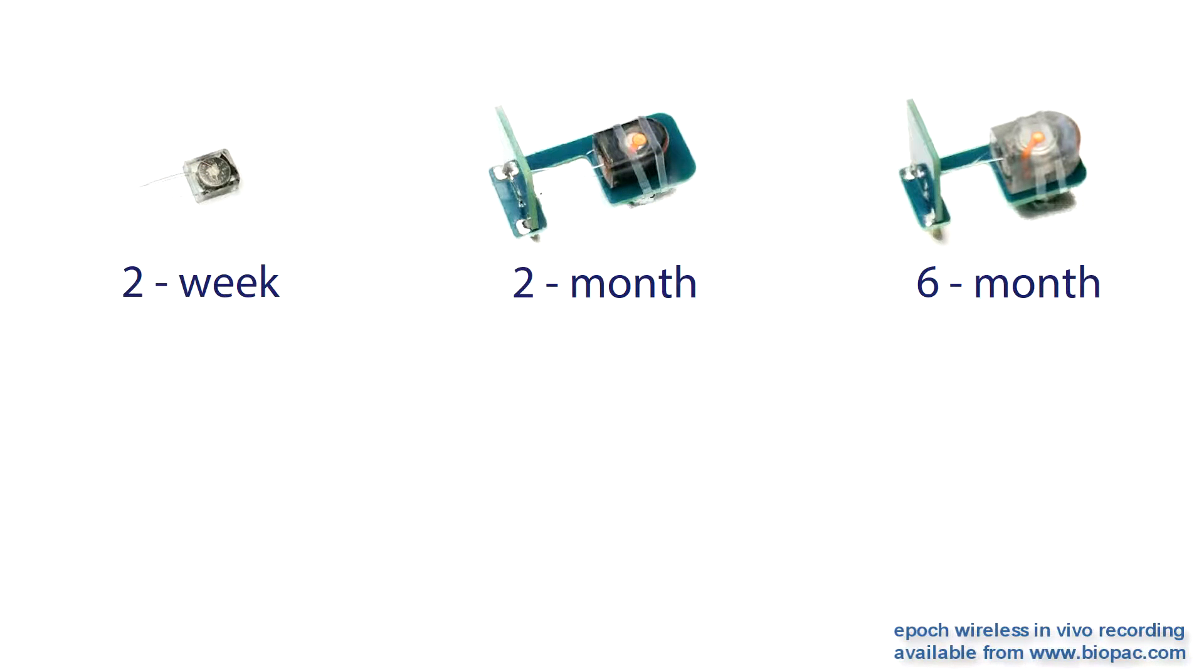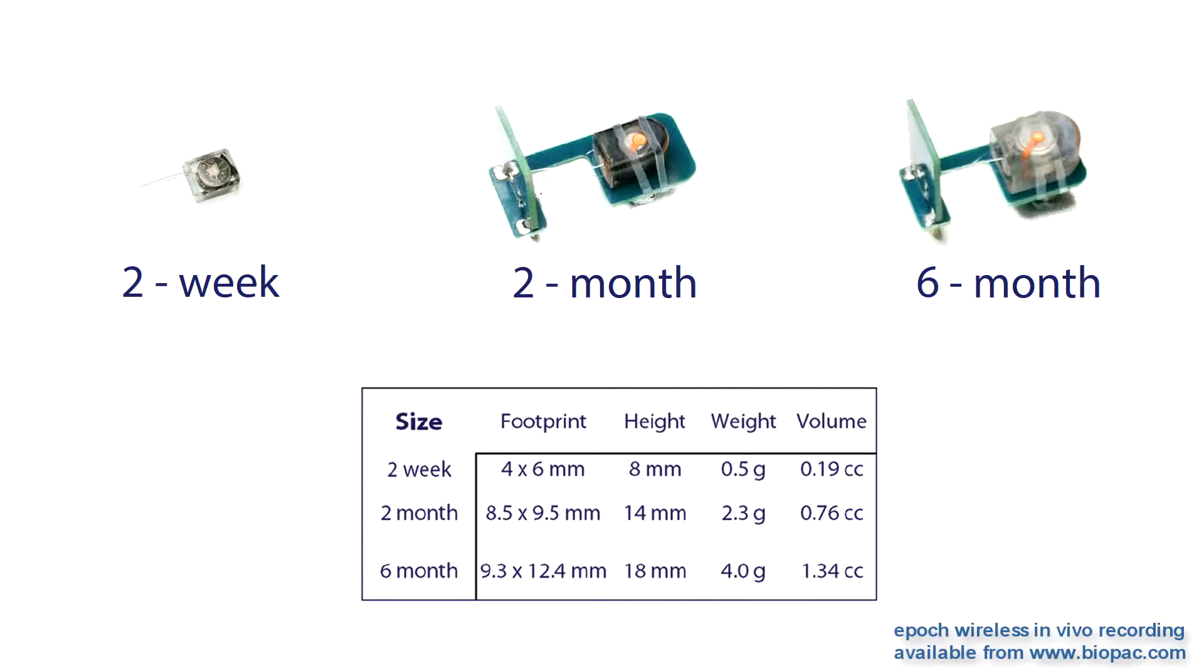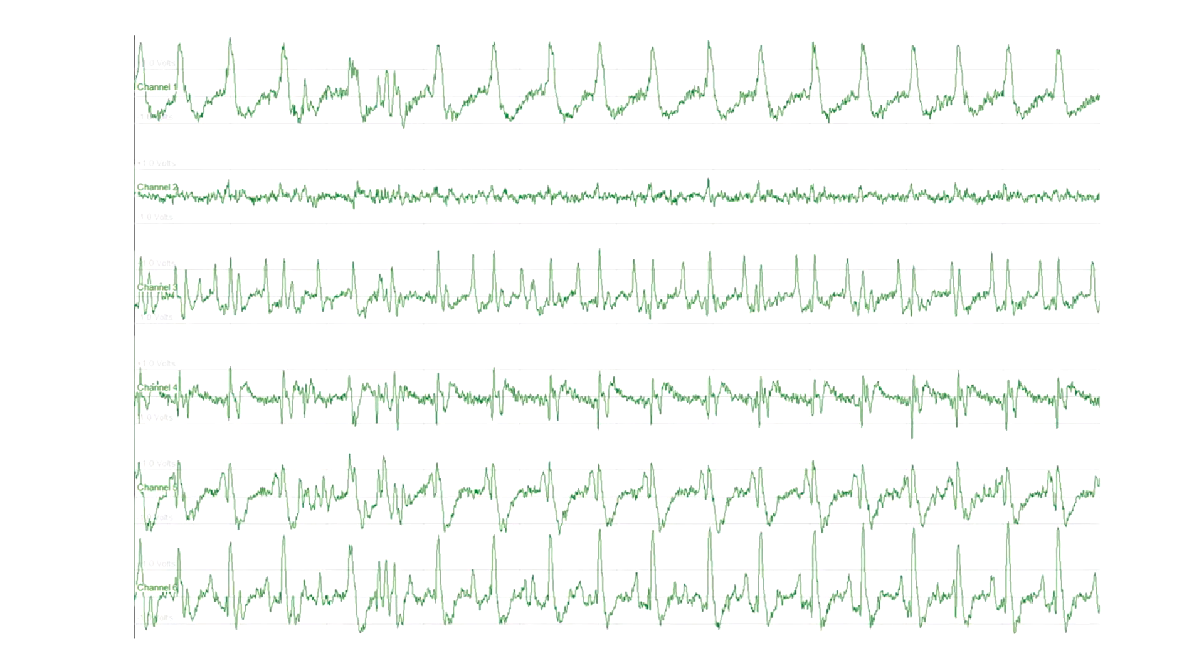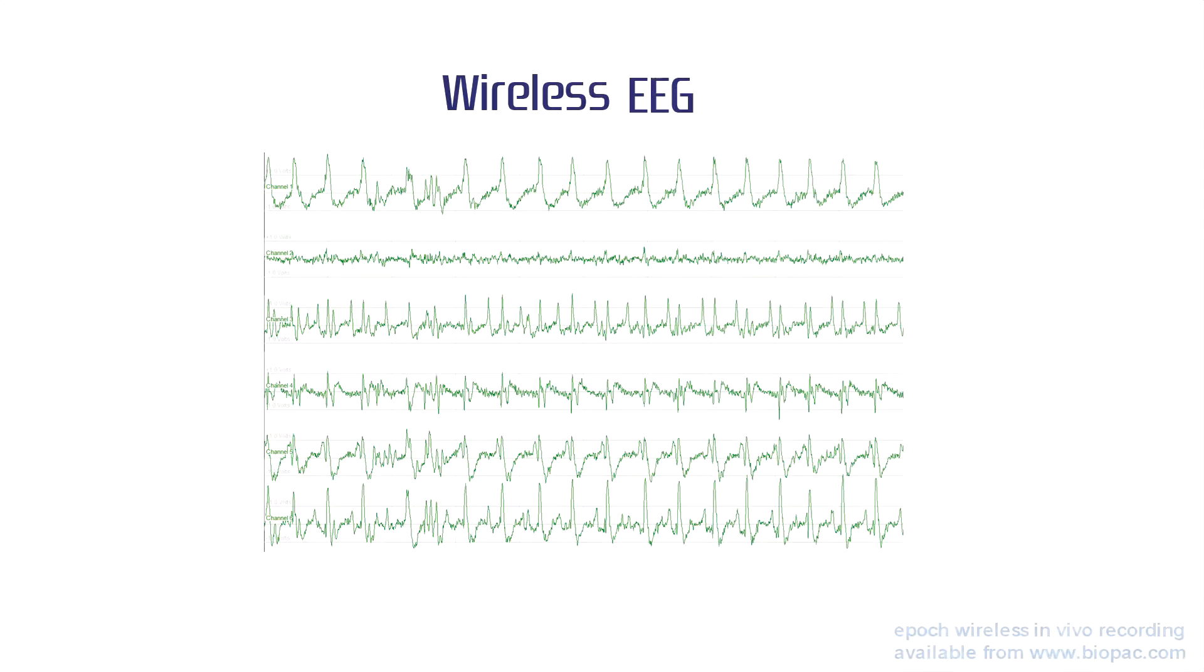EPIC Wireless transmitters are available for a variety of signals with 2-week, 2-month, or 6-month battery life. Wireless EEG is available in 2, 4, and 6 channels.